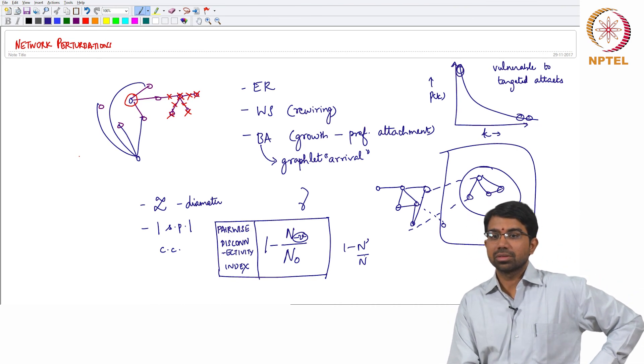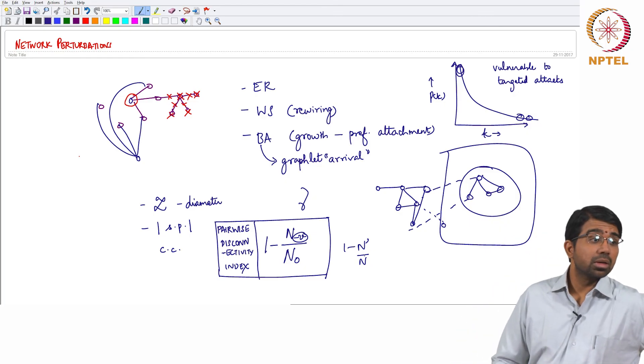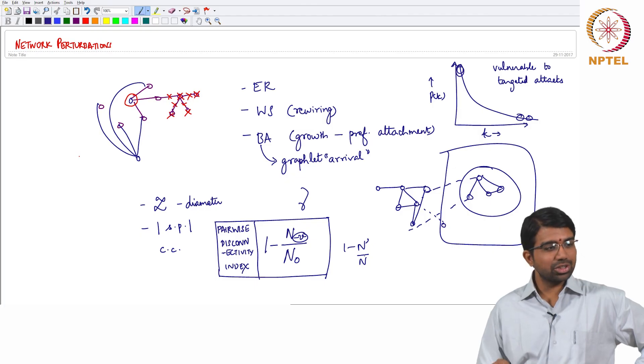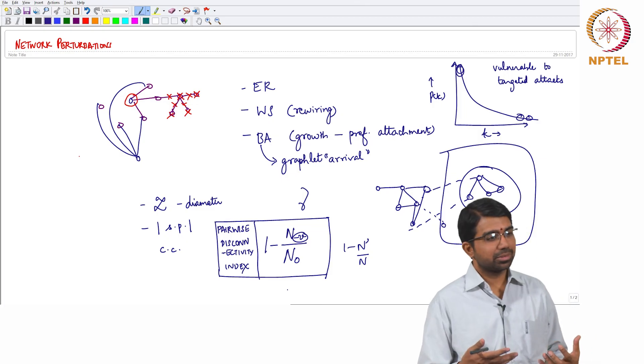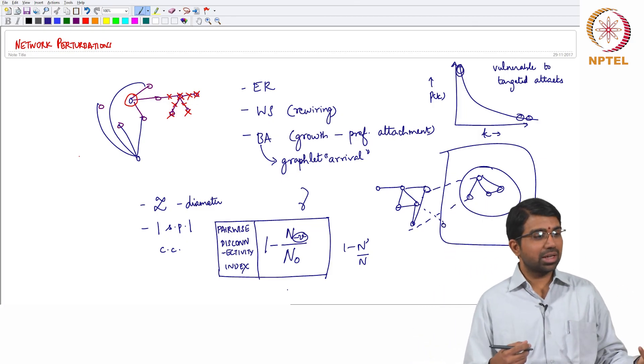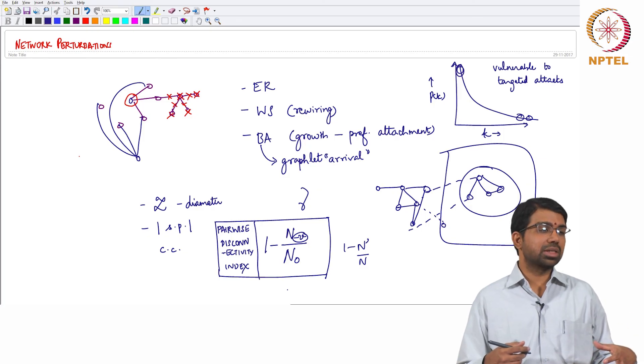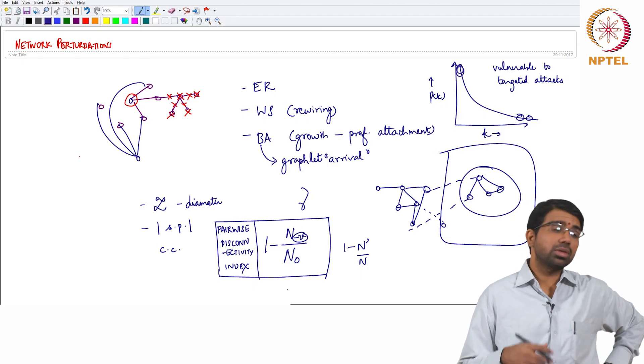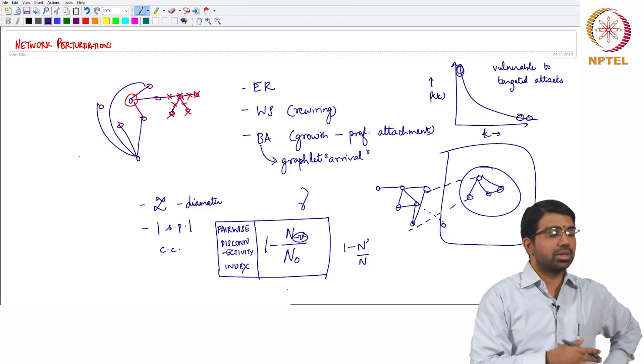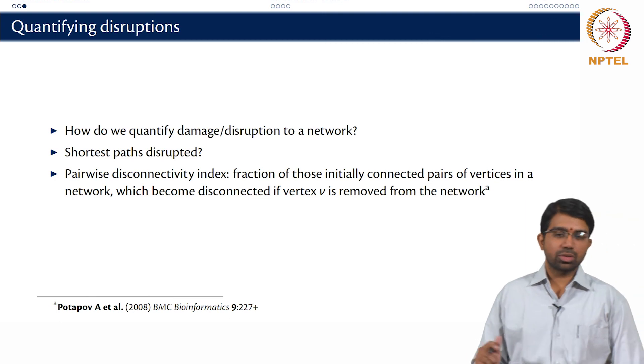So if you have your all shortest path matrix, this looks at pairwise shortest paths. So this somehow measures a pairwise disconnectivity. Some pairs were initially connected but now they have become disconnected. Or some pairs had many more paths initially, now they have much fewer paths. So you can measure it in two different ways.